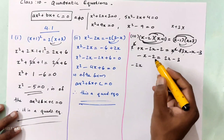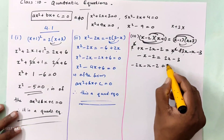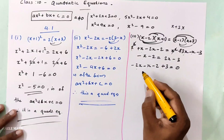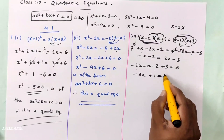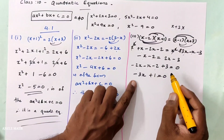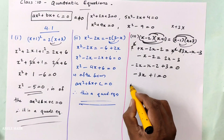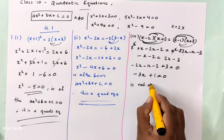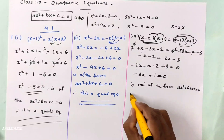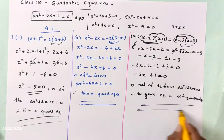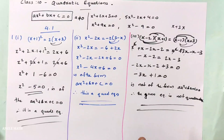So x squared equals zero. Minus 2x minus x gives minus 3x, and minus 2 plus 3 gives plus 1 equals 0. The x squared term cancels out, so the equation is not of the form x² plus bx plus c equals 0. Therefore, the given equation is not a quadratic equation.